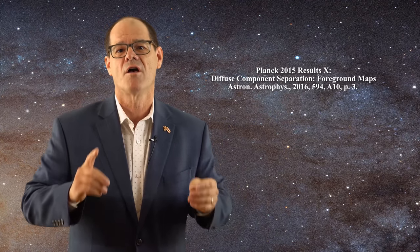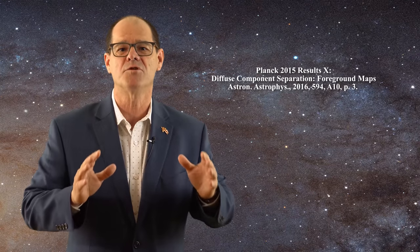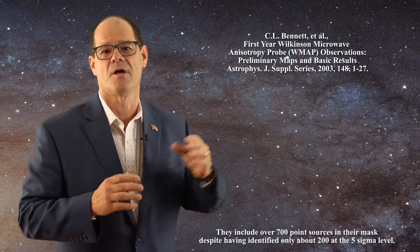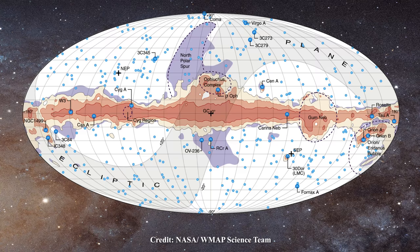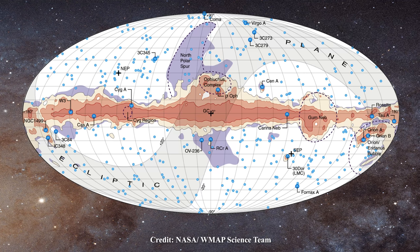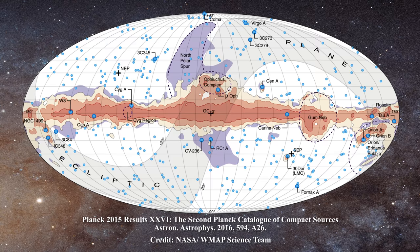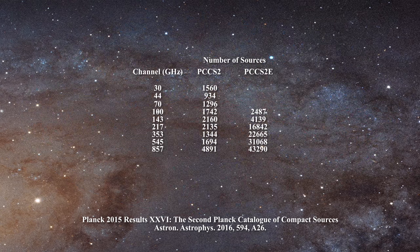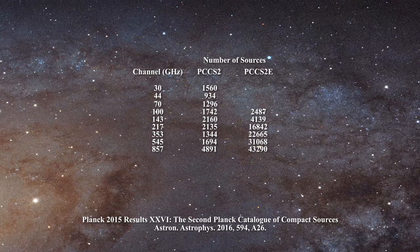Beyond this computational challenge, the first problem to address has to do with point sources. In generating the anisotropy maps, the WMAP team had identified a total of over 200 point sources which are not cosmological in the first-year data release. By the time the ninth-year average was released, slightly more than 500 point sources were identified at the Q, V, and W frequencies. In sharp contrast, the Planck team has now identified a total of tens of thousands of point sources, as shown in a referenced paper and table. The acronym PCCS2 refers to the Planck Catalog of Compact Sources second release.